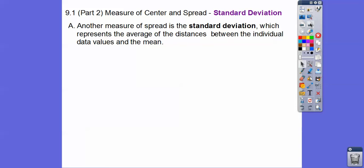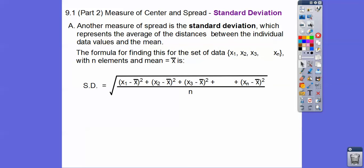And it represents the average of the distances between the data values and the mean. And you're thinking, what does that mean? Well, here's the formula and here's another, what does that mean?